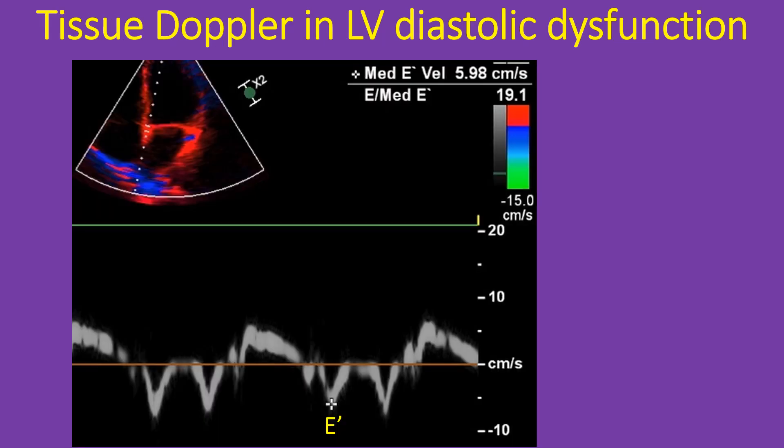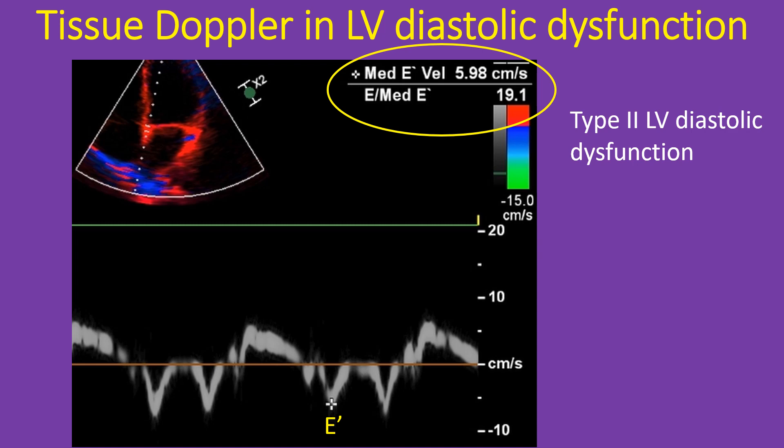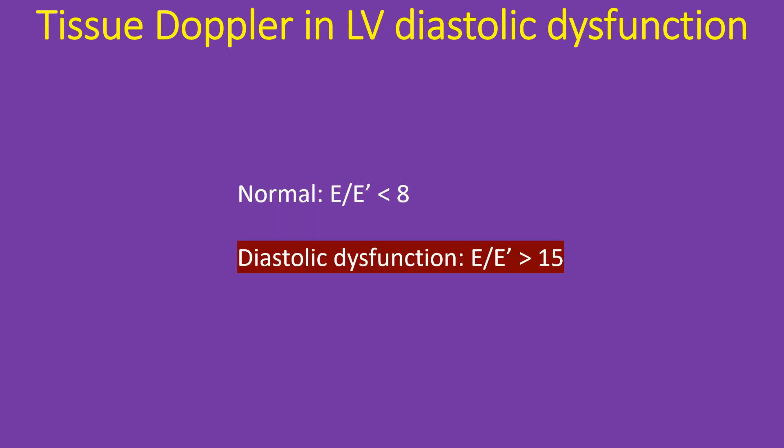Tissue Doppler imaging with colour kinesis in the inset: E by E prime of the medial mitral annulus is shown as 19.1, indicating type 2 left ventricular diastolic dysfunction. In diastolic dysfunction, as relaxation of the ventricle is impaired, the velocity of the medial mitral annulus is reduced so that the E by E prime ratio is increased. E wave is measured prior to tissue Doppler imaging and stored so that the software displays the E by E prime ratio as soon as E prime is measured. E by E prime below 8 is considered normal, while a ratio above 15 is considered a feature of left ventricular diastolic dysfunction. E by E prime has been correlated with left atrial pressure, which is the left ventricular filling pressure that increases in diastolic dysfunction. Estimation of pulmonary capillary wedge pressure from E by E prime on tissue Doppler was covered in another video on this channel.